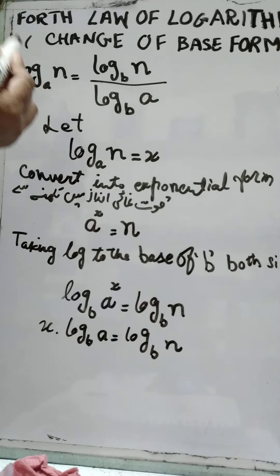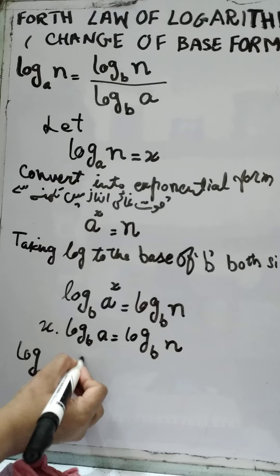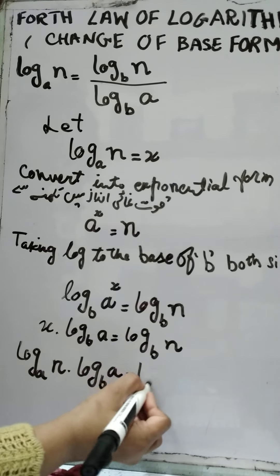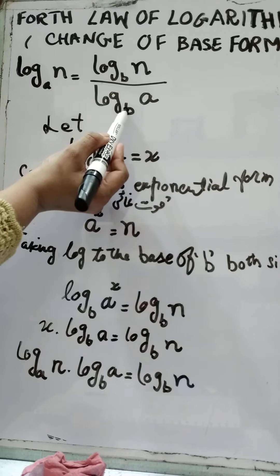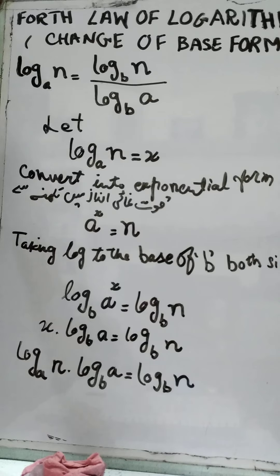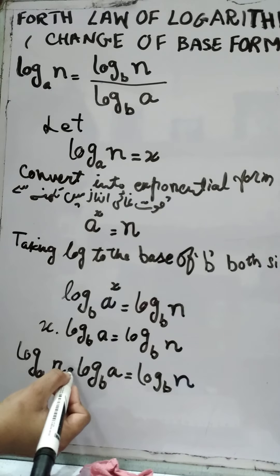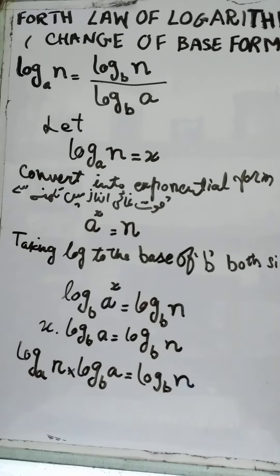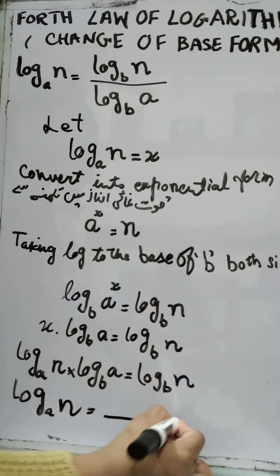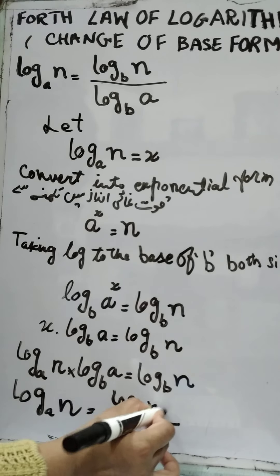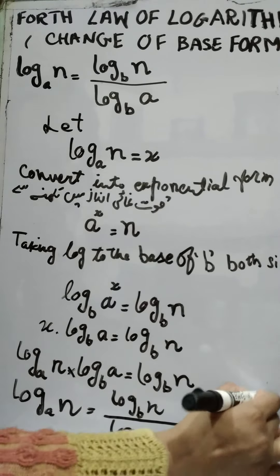Here we'll put the value of x, where x is equal to log base a of n. We take log base b of a to the other side — this multiplication becomes division on the other side — and hence we have proved our fourth law of logarithm.